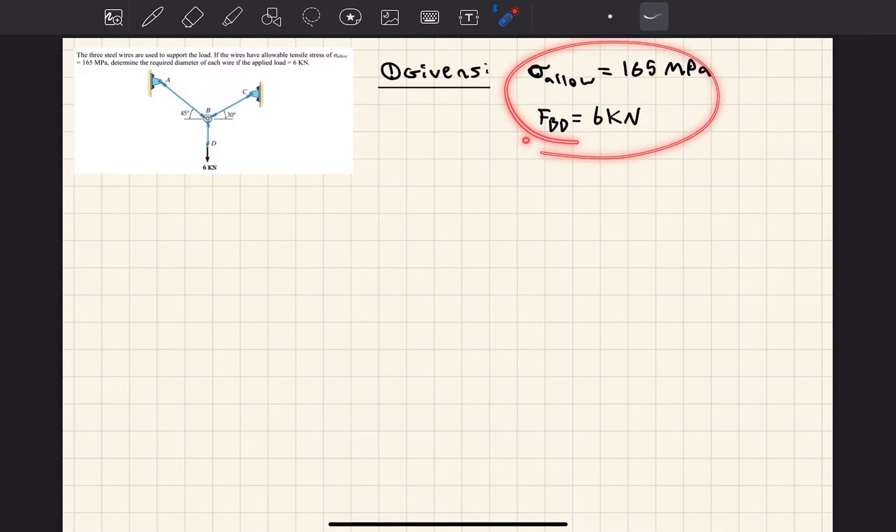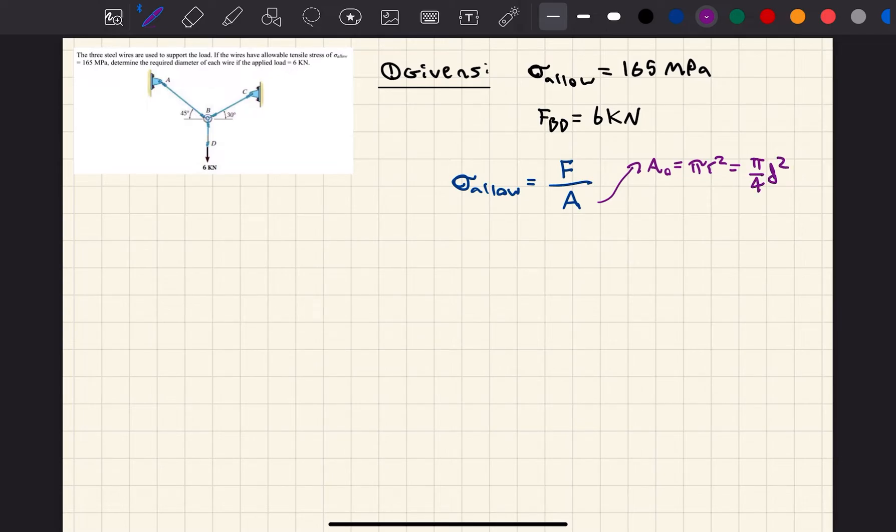What formula can I come up with from these givens? I know that sigma allowable is equal to the force causing the stress divided by the cross-sectional area. Since it's asking for a diameter and it's a wire, I assume it's a circular cross-sectional area. The area of a circle is pi r squared, but since we need diameters, I'm going to use pi over 4 d squared. That's the formula I'm going to use.